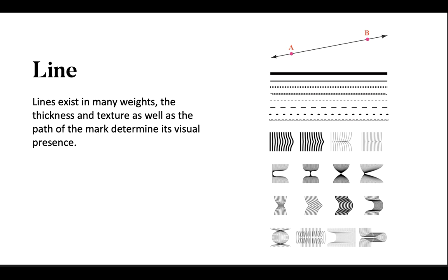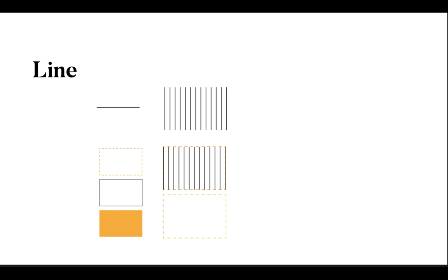The thickness and texture as well as the path of a mark determine its visual presence. Lines can be drawn with a pen, pencil, brush, mouse, or digital code. They can be straight or curved, continuous or broken. When a line reaches a certain thickness, it becomes a plane. Lines multiply to describe planes, textures, and volume.